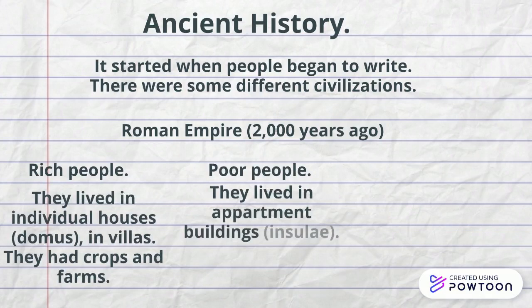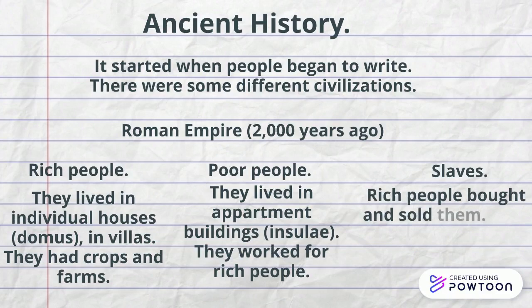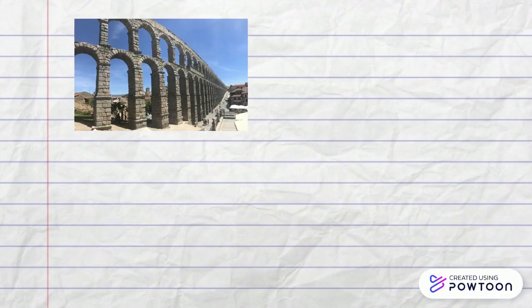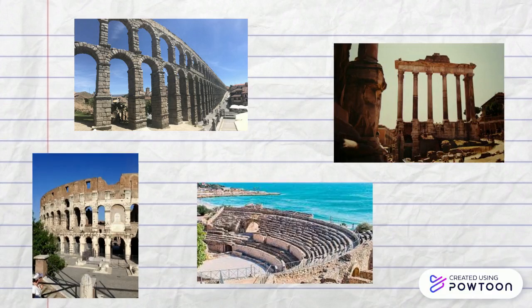Then poor people. They lived in apartment buildings called insulae and they worked for rich people. And finally there were slaves. Rich people bought and sold them. They didn't have rights. Romans built aqueducts to take water to cities, temples for their gods, and also theatres and amphitheatres for entertainment.